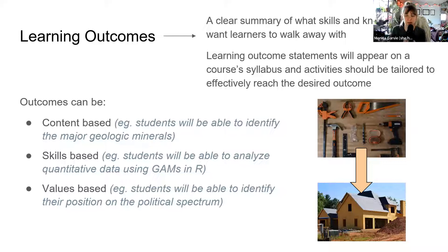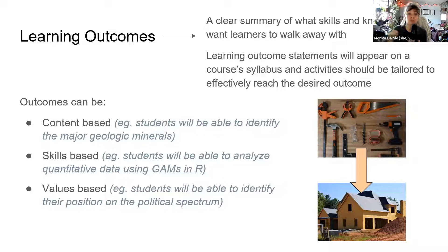Learning outcomes: a clear summary of what skills and knowledge we want learners to walk away with. Learning outcome statements appear on the syllabus — it's almost like a contract outlining what students can expect. Outcomes can be content-based, such as students identifying major geologic minerals; skills-based, such as analyzing quantitative data using general additive models in R; or values-based, such as students identifying their personal position on the political spectrum. They provide a guide on what students will be able to do at the end of instruction.